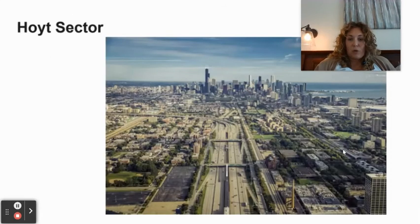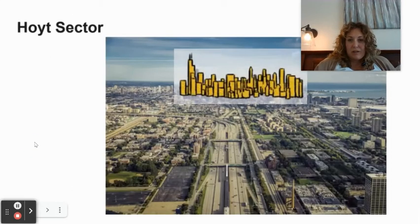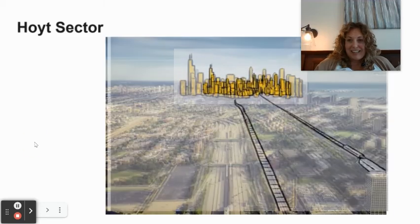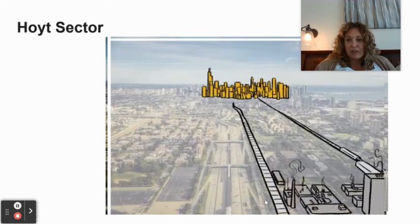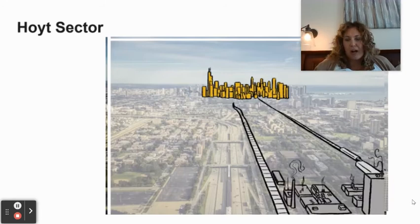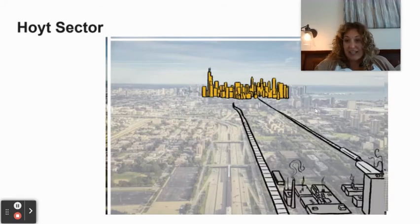Looking at the Hoyt Sector Model: the central business district is in the center, and railroads radiate out from it. Industry is placed far enough away that noise and smell don't impact the city center, but it's still easily accessible — and you can see it forms a literal wedge coming out from the center.